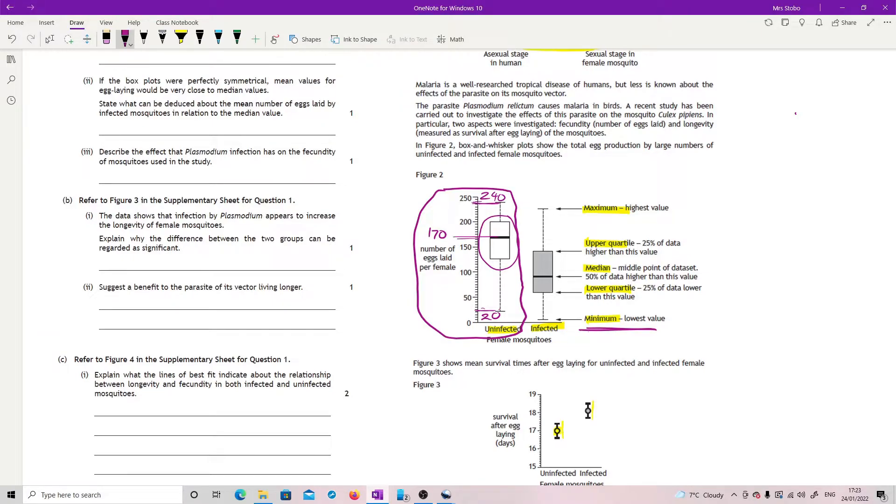Or you could say less than 50 percent have less than 170. And you could also read off quartile ranges. So you could say that 25 percent under or over.